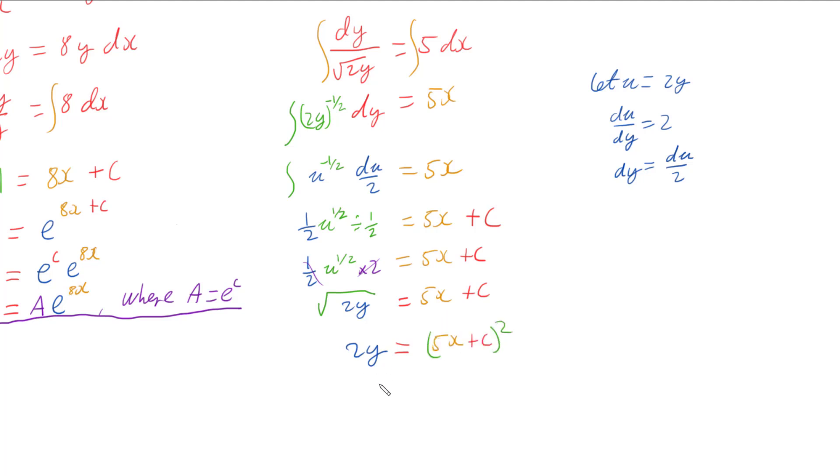And then to get the y on its own, I'm just going to divide both sides by 2. So we're going to have a half outside of our 5x plus c and that is all squared.